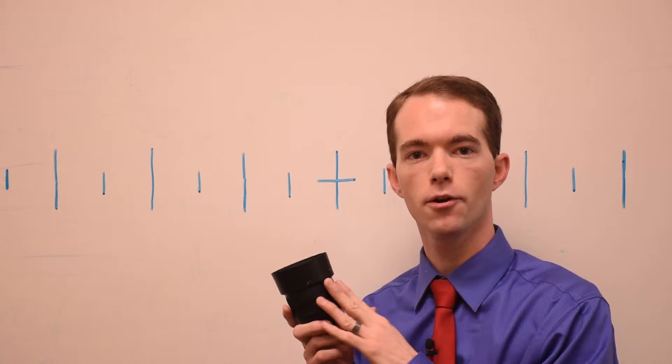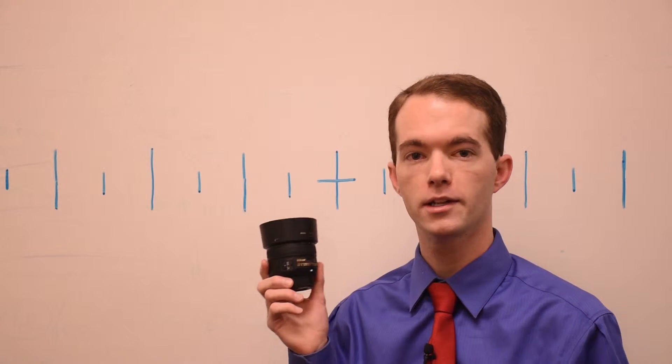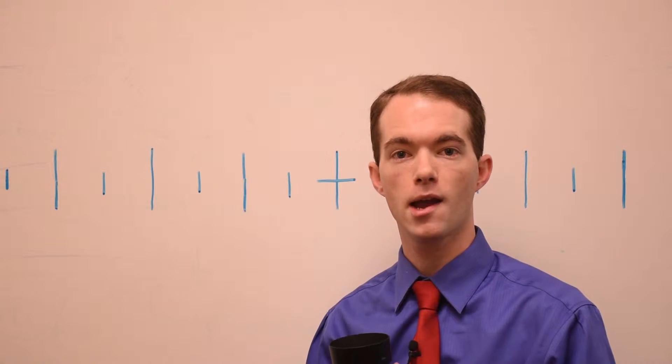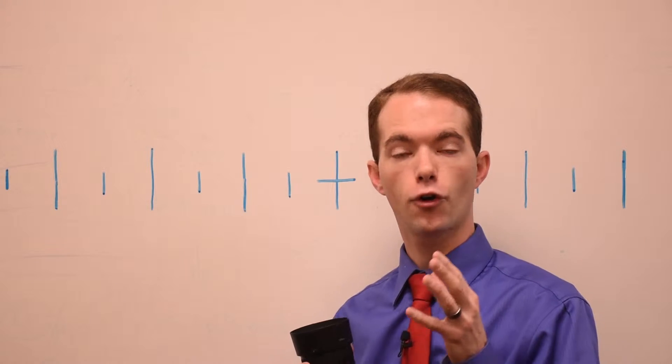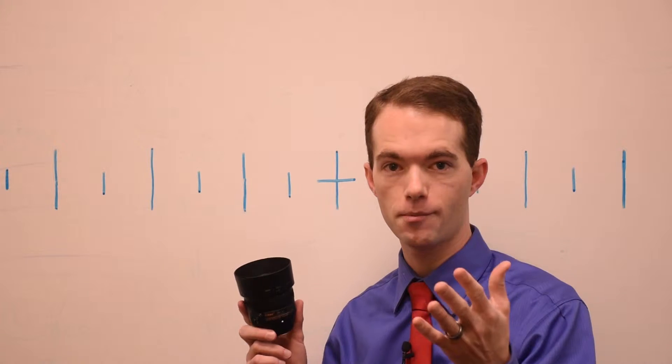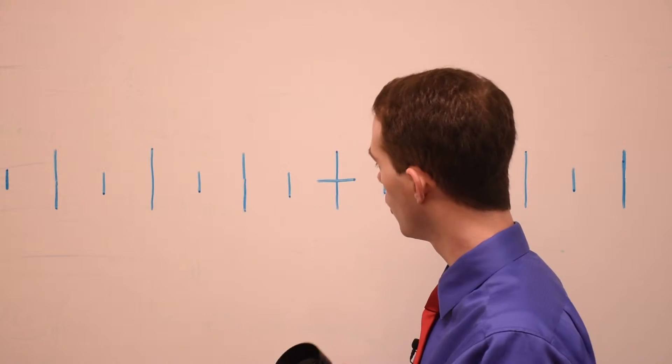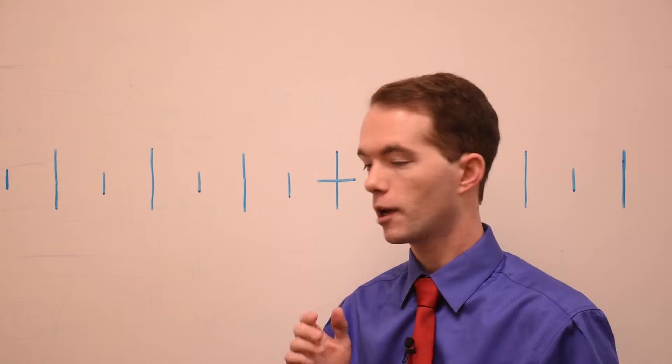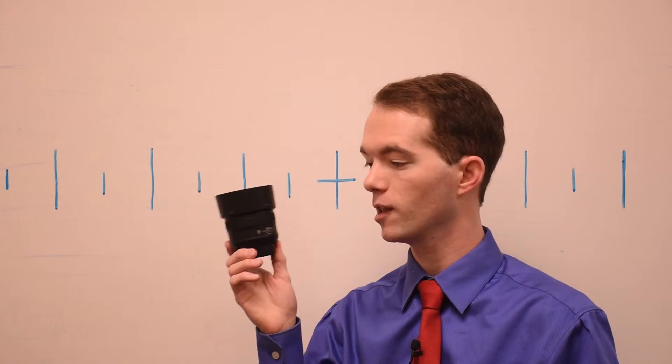Now this lens here is the 50mm Nikon, it's a prime lens which means it doesn't zoom. My lens that I bought when I got my camera is a zoom lens. I've currently got it set to 50mm according to the dial on top. What I want to do is see how that 50mm there compares to the 50mm here.